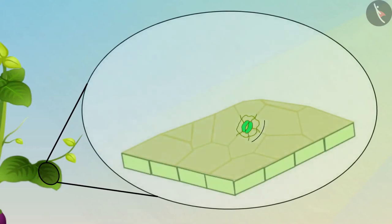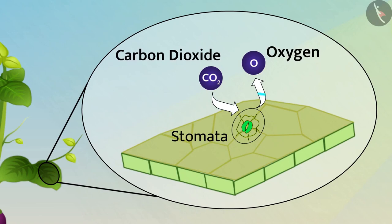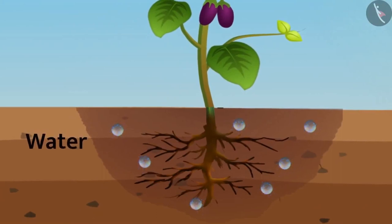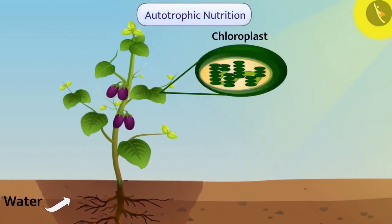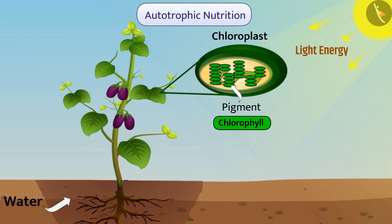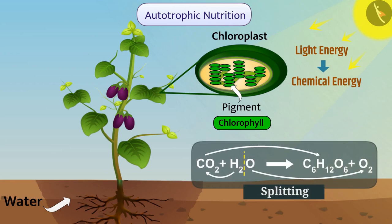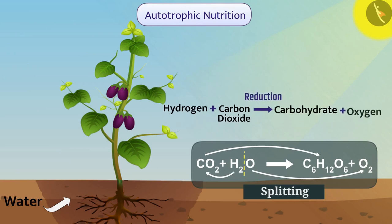On the leaf surface, there are microscopic pores called stomata. Stomata exchange gases — with their help, carbon dioxide is taken from the air and oxygen is released into the air. Similarly, the roots of the plant absorb water from soil and send it upward so that the water requirement can be fulfilled. Green leaves have chloroplasts that contain a pigment called chlorophyll. During photosynthesis, chlorophyll absorbs light energy. Through different reactions, light energy is converted into chemical energy. The water molecules are split into hydrogen and oxygen. With the help of the obtained hydrogen, carbon dioxide is reduced to carbohydrate and oxygen is released into the air.